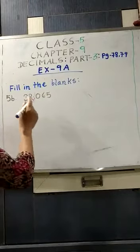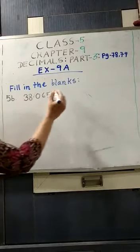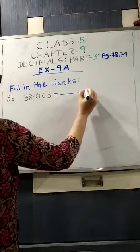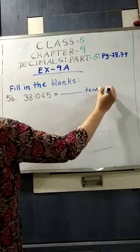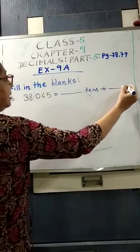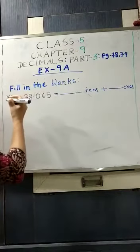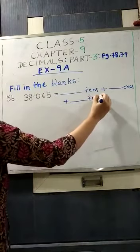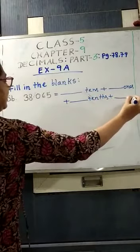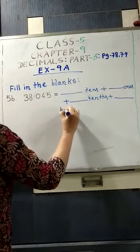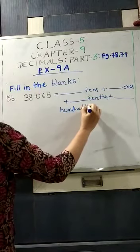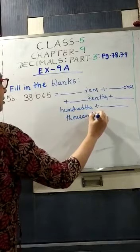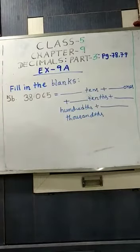Now, we will have to do fill in the blanks. Is equal to tens, plus ones, plus tenths, plus hundredths, plus thousandths. It is given in the book.